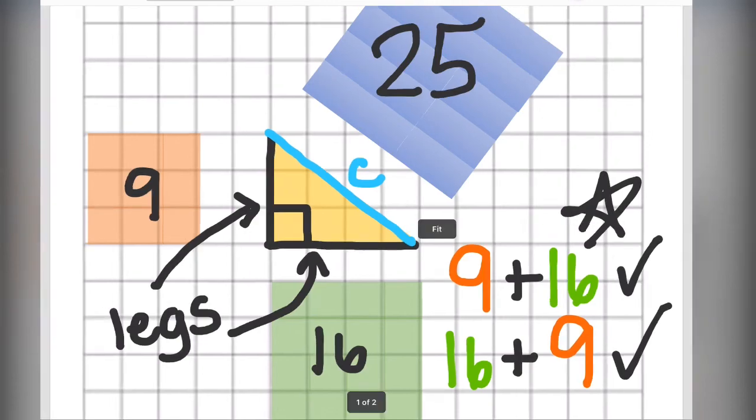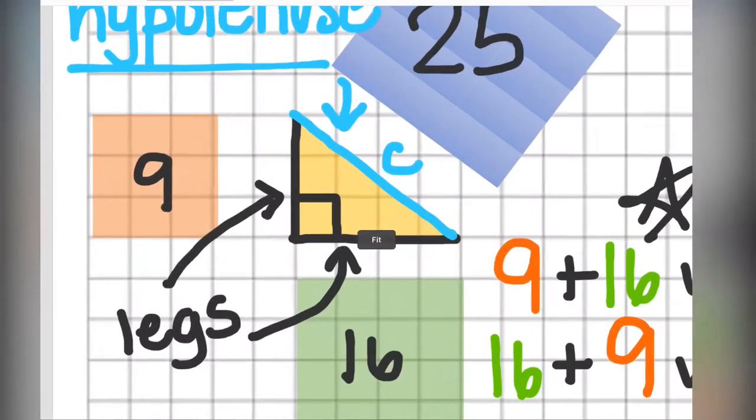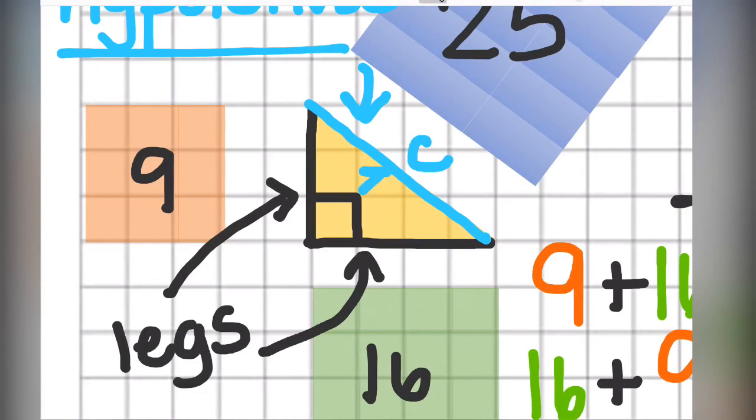However, the other side that is across is C. C is called the hypotenuse. Try to say that. Hypotenuse. Very strange, I know. But you can call it C. Know that it is always located across from the right angle that is formed by the legs.